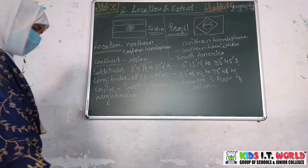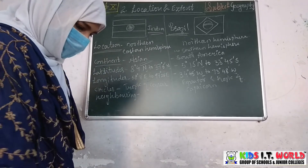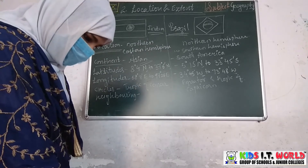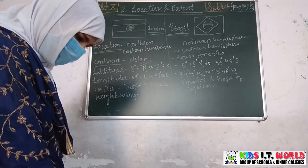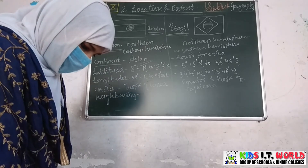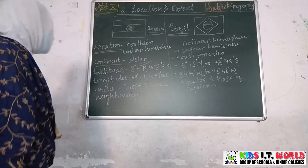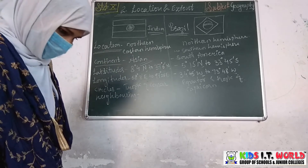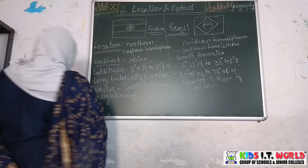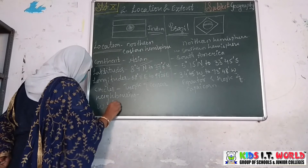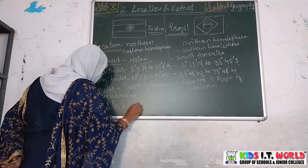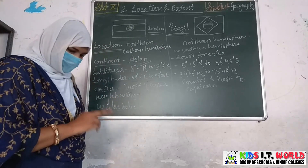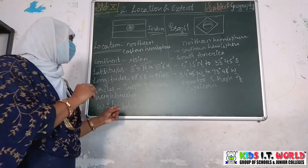These are the neighboring countries of India. Now the neighboring countries of Brazil are: French Guiana, Suriname, Guyana, Venezuela, Colombia, Peru, Bolivia, Paraguay, Argentina, and Uruguay. Regarding water bodies, India is surrounded by three water bodies: the Bay of Bengal, the Arabian Sea, and the Indian Ocean.